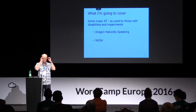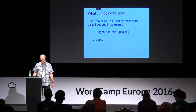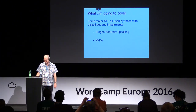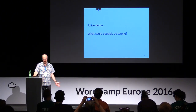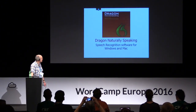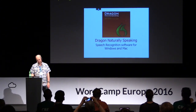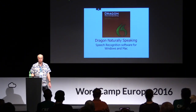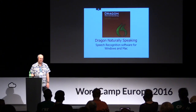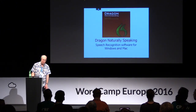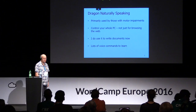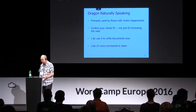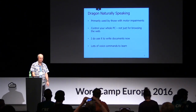Assistive technology comes in a variety of forms. This is the simplest for me because I have poor eyesight. But these are both software-based tools. Dragon NaturallySpeaking is the one I'm going to do first. It's a live demo, so there's always a bit of a gamble. Dragon NaturallySpeaking is speech recognition software for Windows and Macs. It's primarily used by people with motor impairments — people who can't, for whatever reason, interact with the keyboard and mouse.